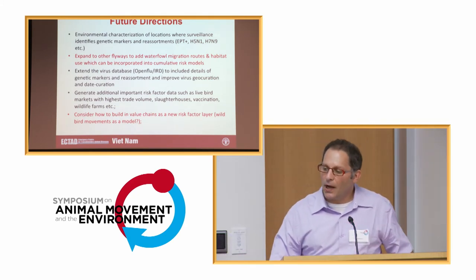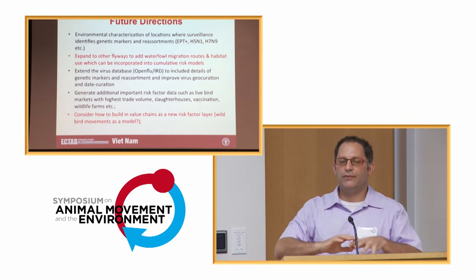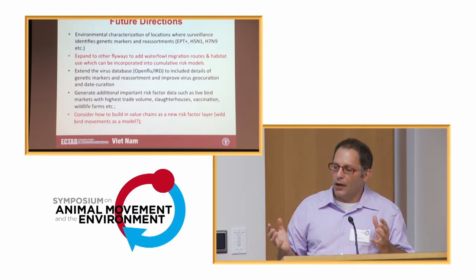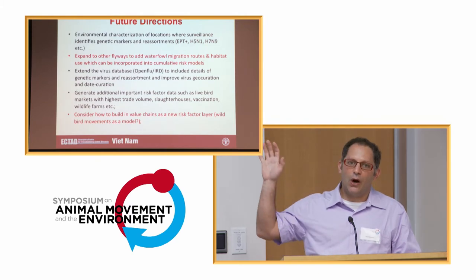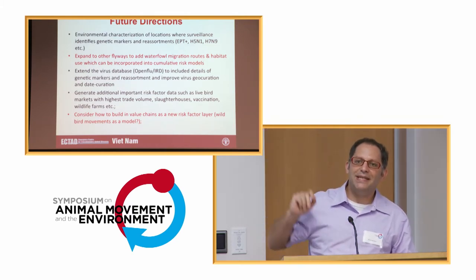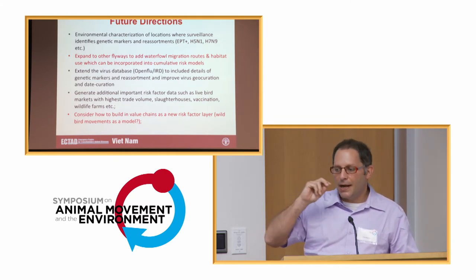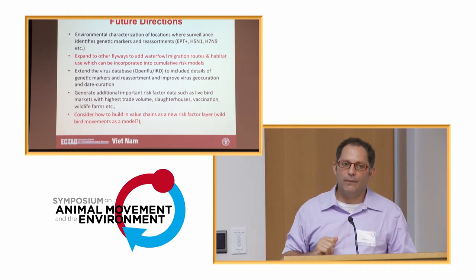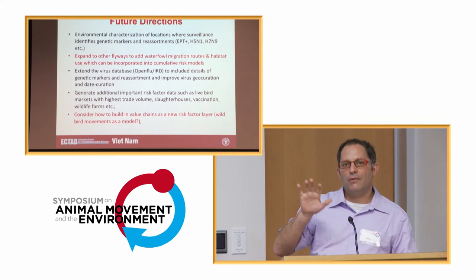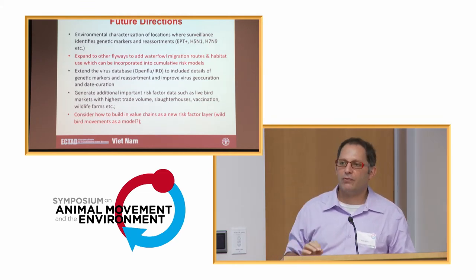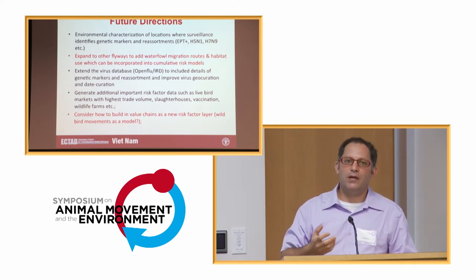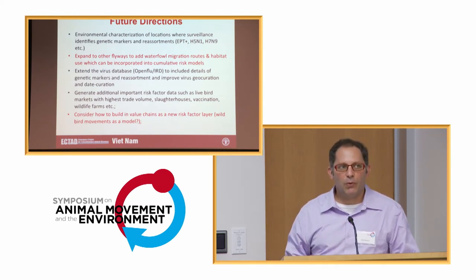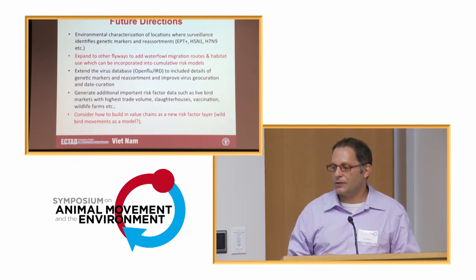For future directions, as a research group we want to build in other flyway information — other migration and habitat-use data. Our focus has been on the Central Asian flyway and the East Asian-Australasian flyway. We have limited data there, and also limited data for the African-Eurasian flyway. To a large extent the program focused on those areas because that's where H5N1 high-path was really taking its toll and persisting — there are endemic countries there. But there's big interest in building a broader database to fill gaps in different flyways.